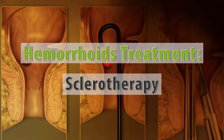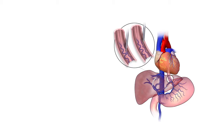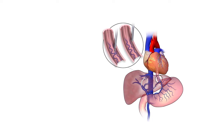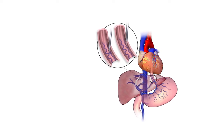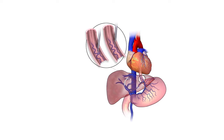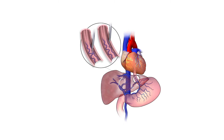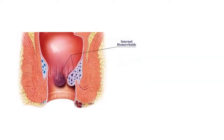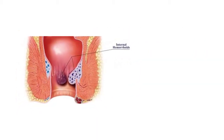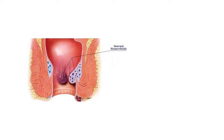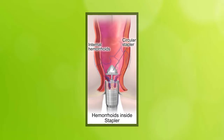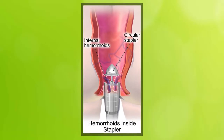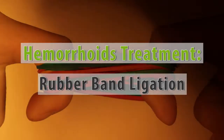During sclerotherapy, a liquid — phenol or quinine urea — is injected into the base of the hemorrhoid. The veins thrombose, inflammation sets in, and ultimately scarring takes place, causing the hemorrhoid to shrink.